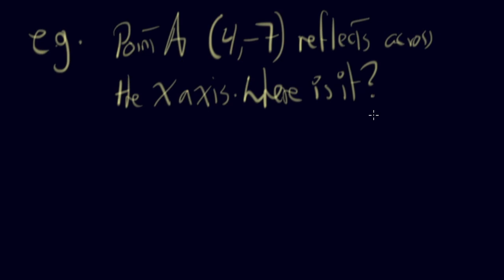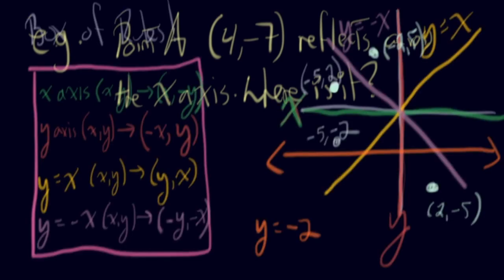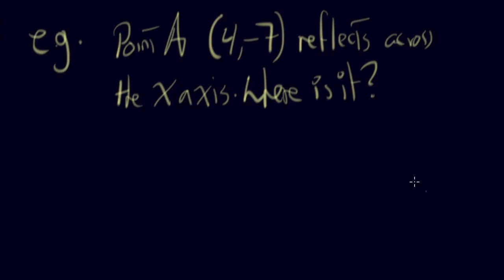You say, hmm. So what is going to happen? Remember, you can always go back and just see what are the rules. So x-axis, it looks like the x stays the same. So that x would stay the same. But I think the y is going to change. So that stays the same. So 4. And this negative 7 becomes positive 7, like that.